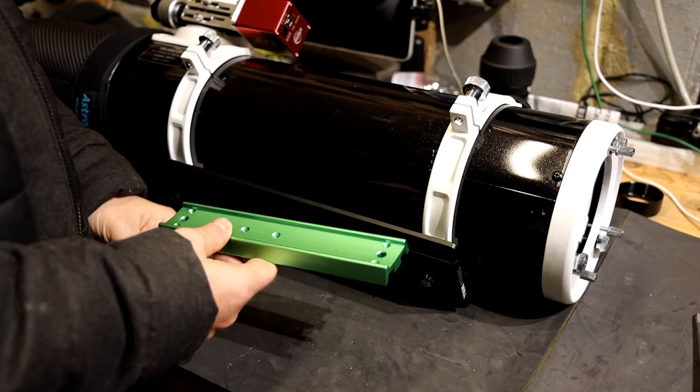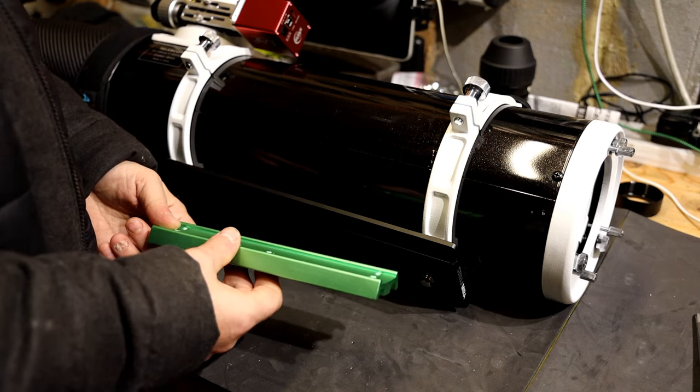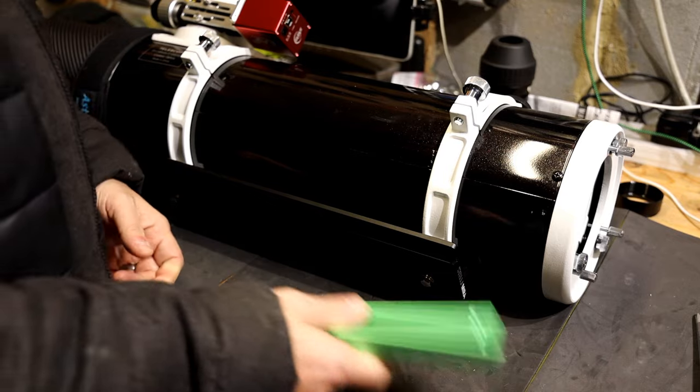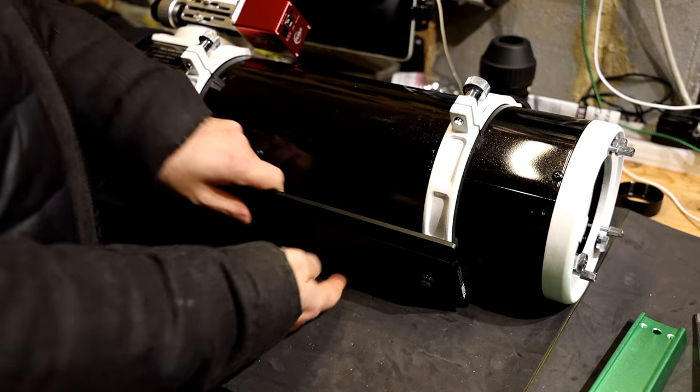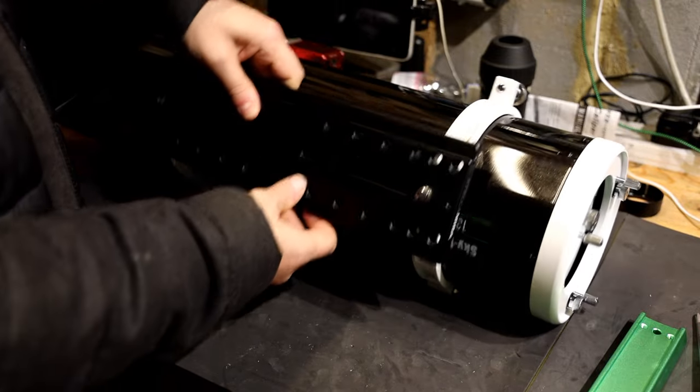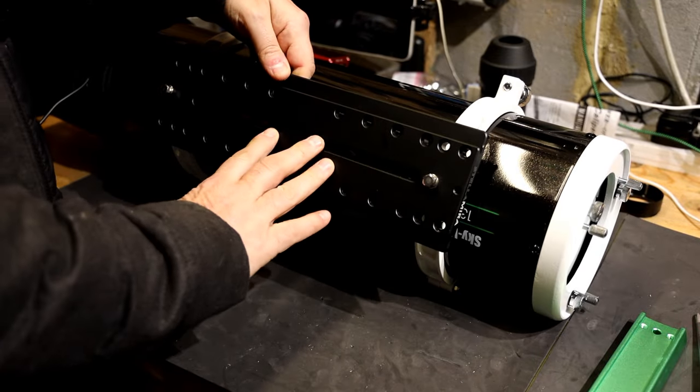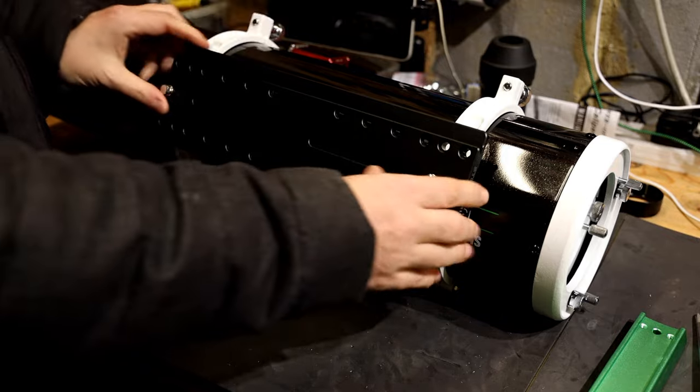So I had to change it anyway. Rather than just getting a larger dovetail bar, I decided to go for a Losmandy plate because it's a much sturdier mount, or plate should I say, to support the scope.